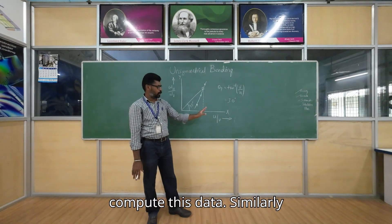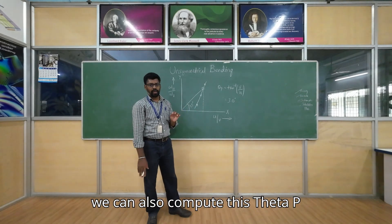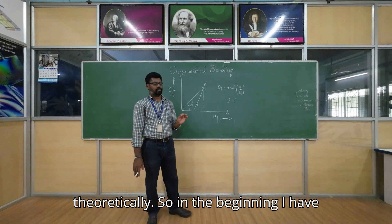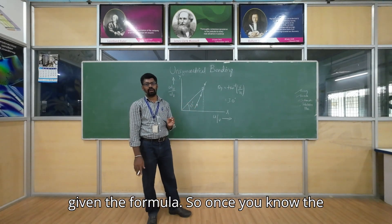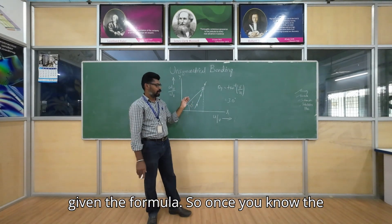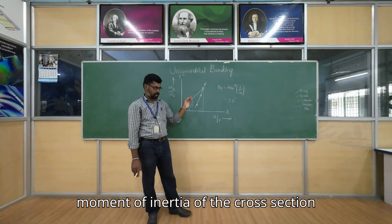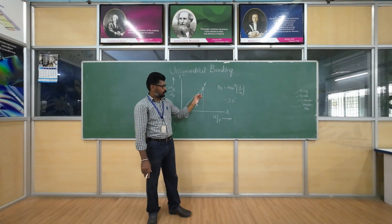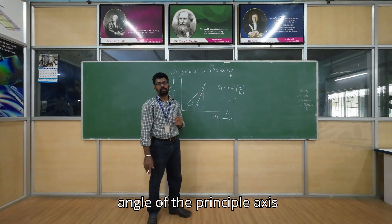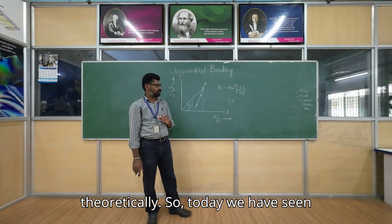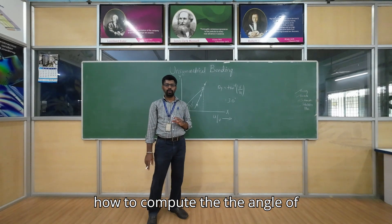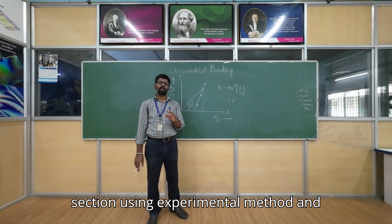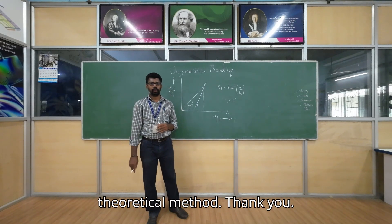This way it is possible to compute the angle of the principal axis of an unsymmetrical cross section using an experimental method. We can also compute theta p theoretically using the moment of inertia formula introduced at the beginning. Once we know the moment of inertia of the cross section, we can compute the principal axis angle theoretically and compare both results.